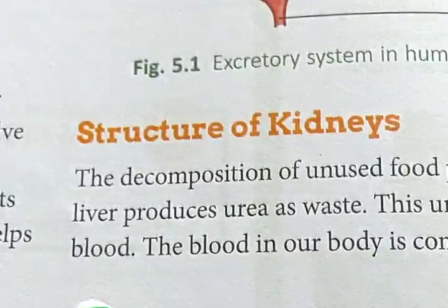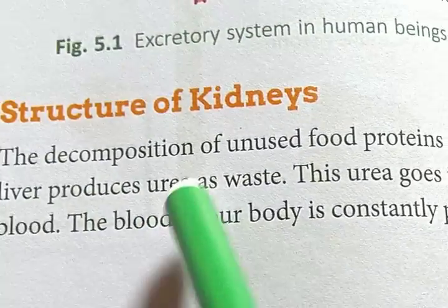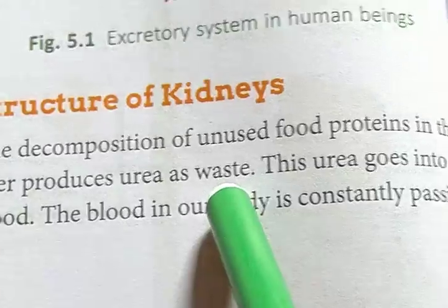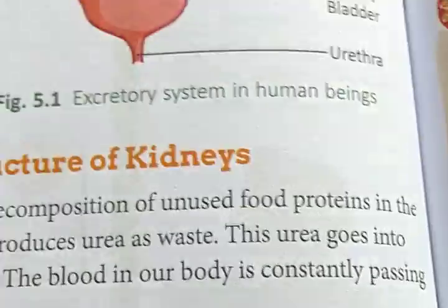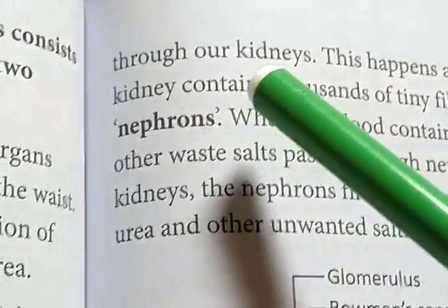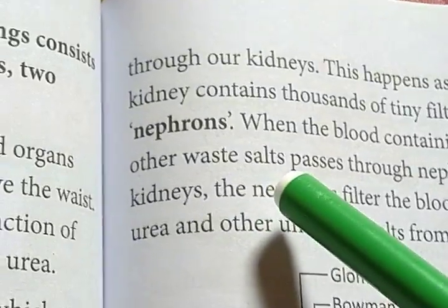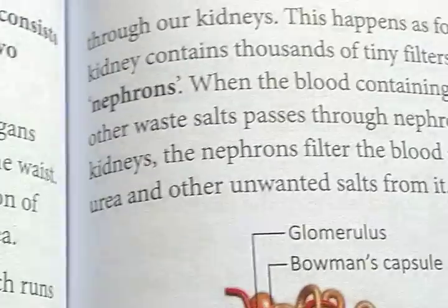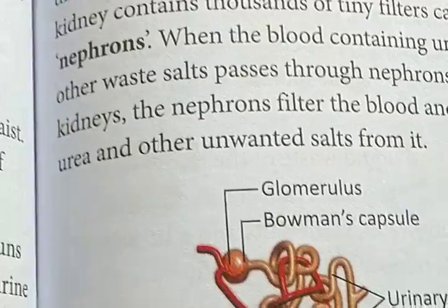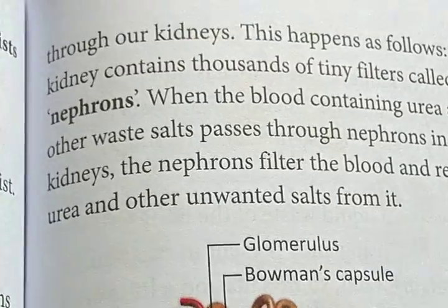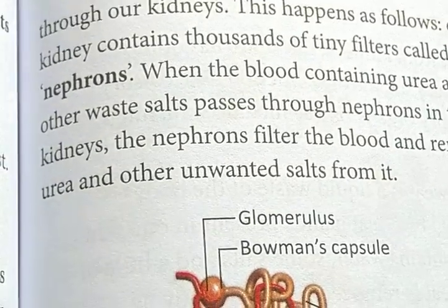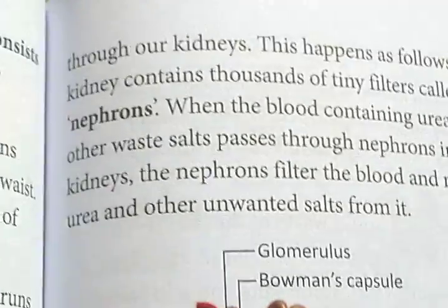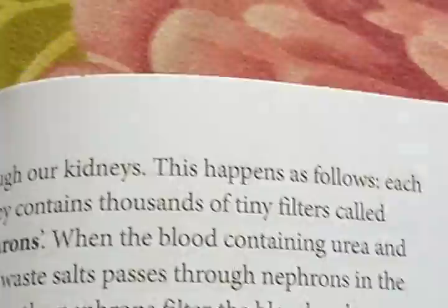The decomposition of unused food proteins in the liver produces urea as waste. This urea goes into the blood. The blood in our body is constantly passing through our kidneys. So urea is formed when unused food proteins decompose in the liver, producing urea as a waste product, which then enters the bloodstream and passes through the kidneys.